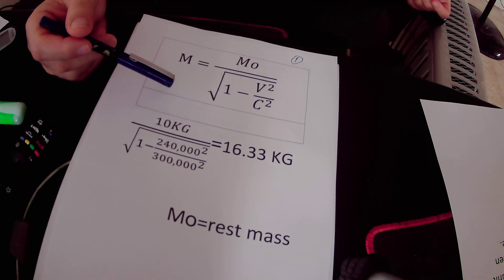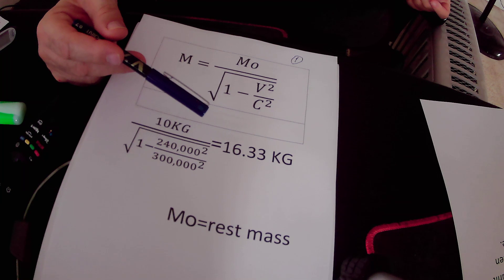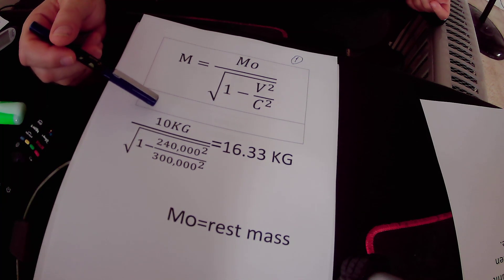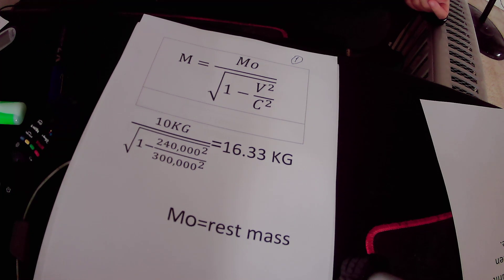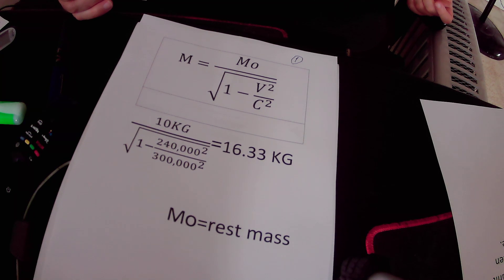In our example, the mass has increased from 10 kilograms to 16.33 kilograms — an increase of 63.3 percent. If the twin brother has a mass detector, the detector will measure 16.33 kilograms. So the mass of the twin brother traveling in space at 240,000 kilometers per second has been increased by 6.33 kilograms.